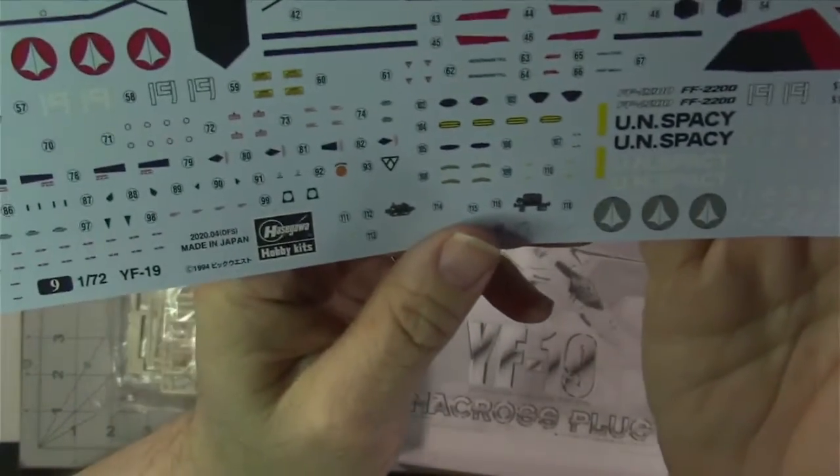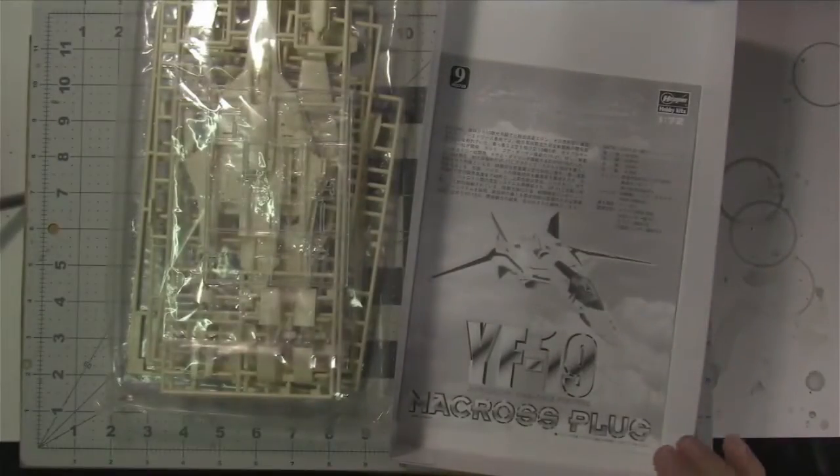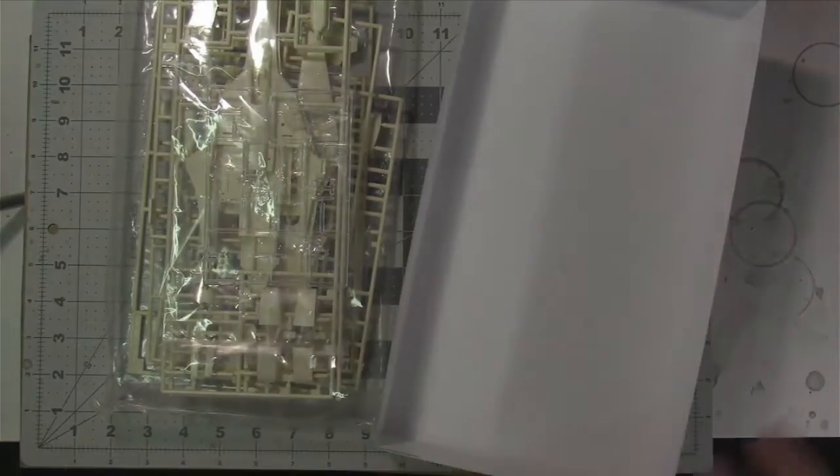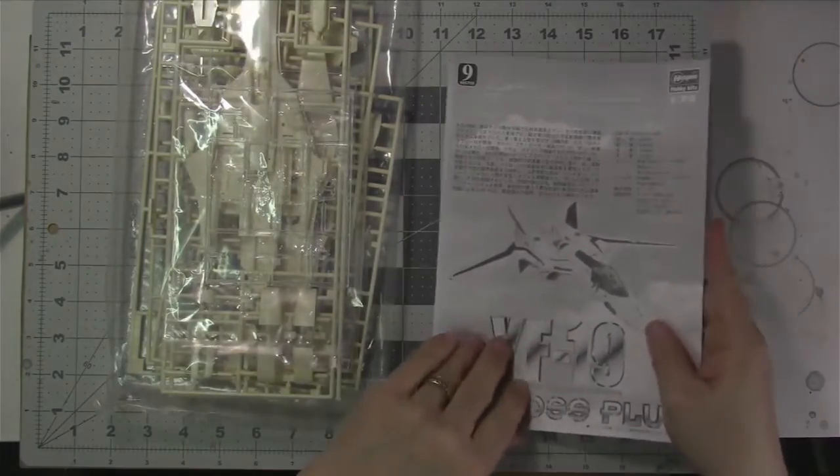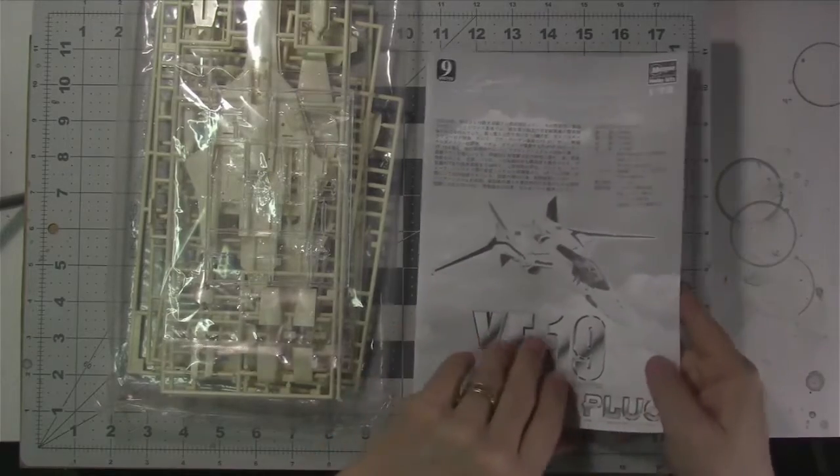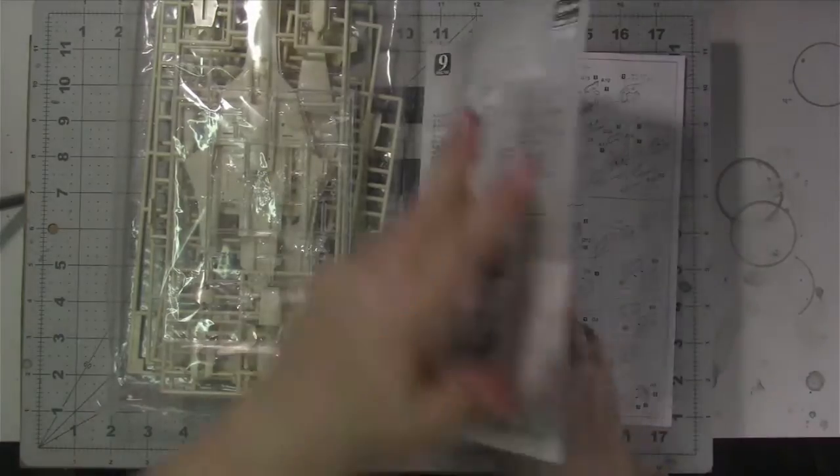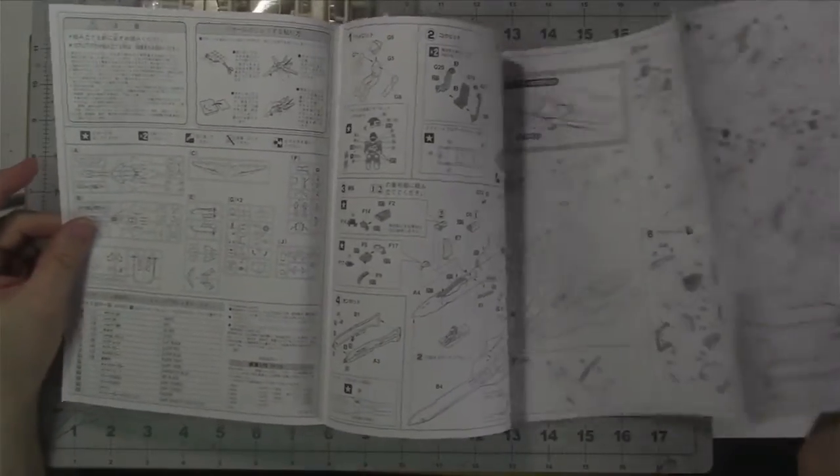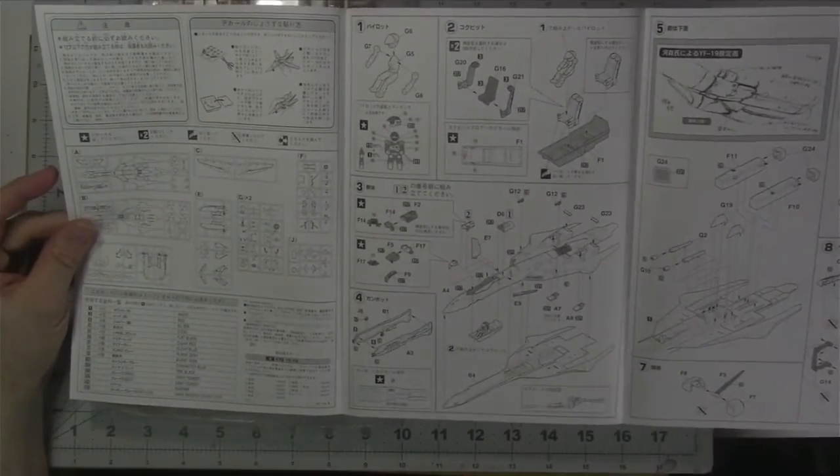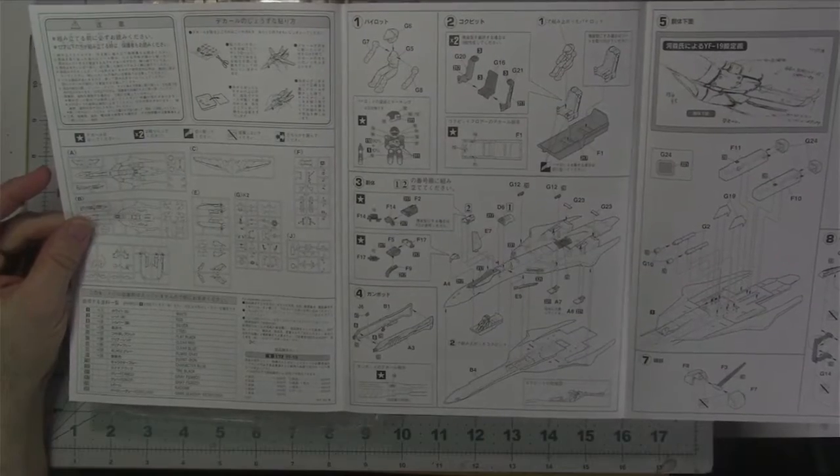So all the stuff, UN Spacey, etc. They're the schemes. Let's have a quick look at the instructions. Here we go. Fairly straightforward. All in Japanese, of course, so you may have to use Google Translate on your phone. Some stuff's in English for the paint call-outs.